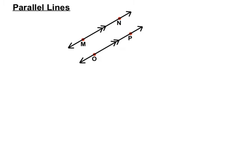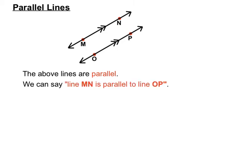Parallel lines are two lines that never meet. The arrows in the middle of the diagram indicate parallel lines — especially when there are two arrows paired off. They're like train tracks; they'll never meet each other. We can say in words that line MN is parallel to line OP, or use the special parallel symbol — two vertical lines — so we write MN parallel symbol OP.